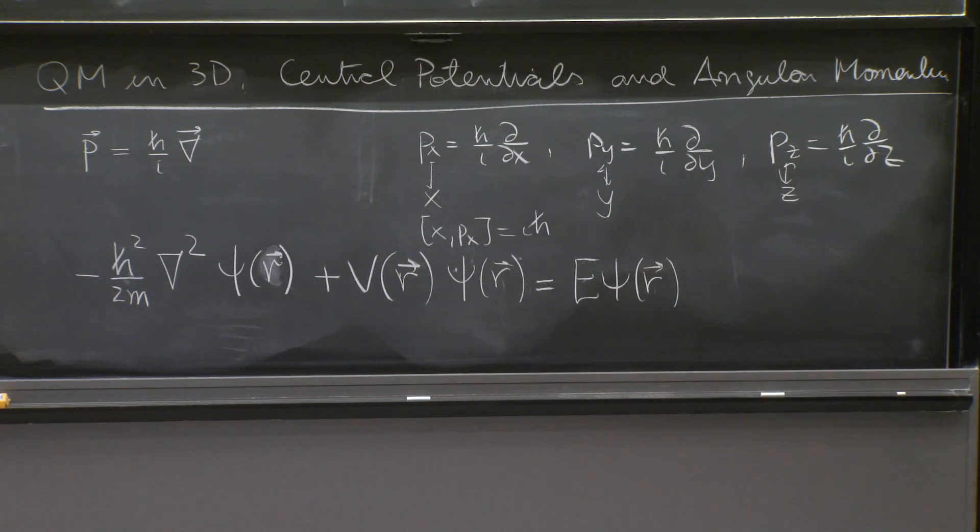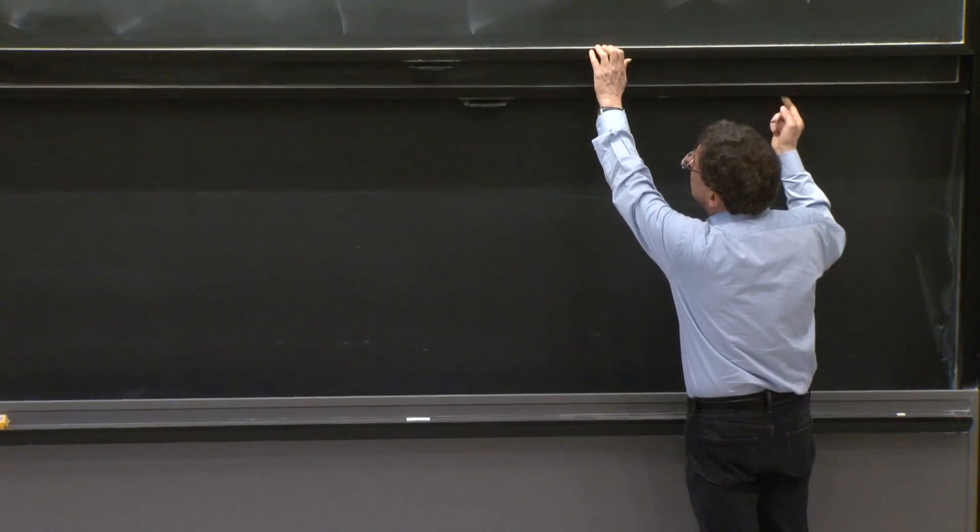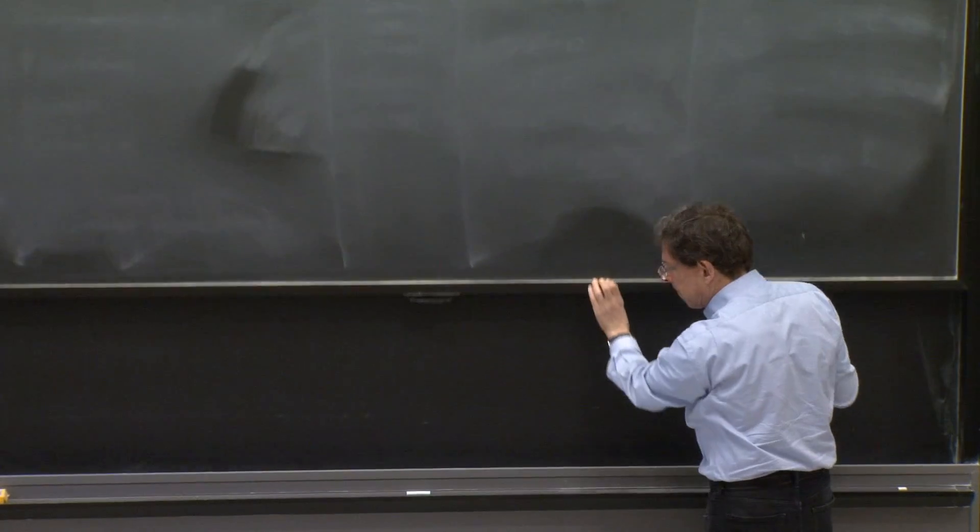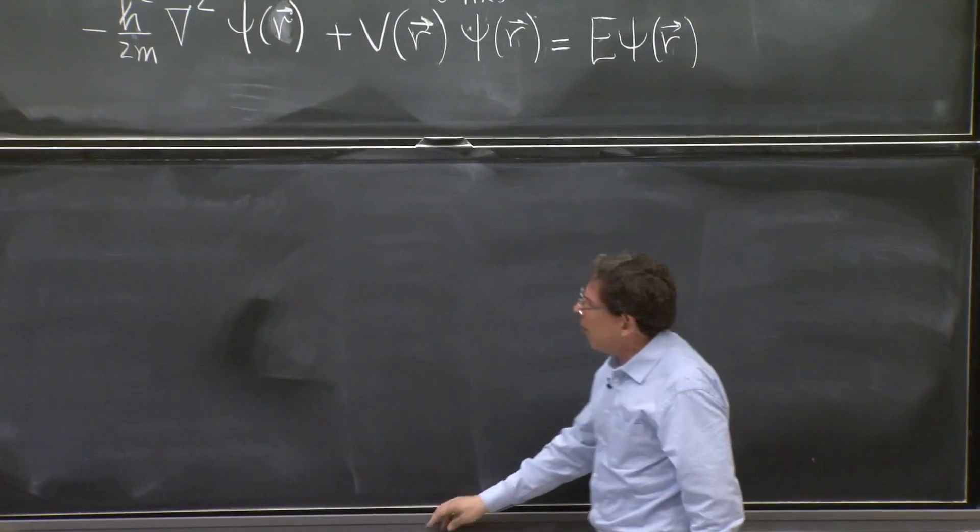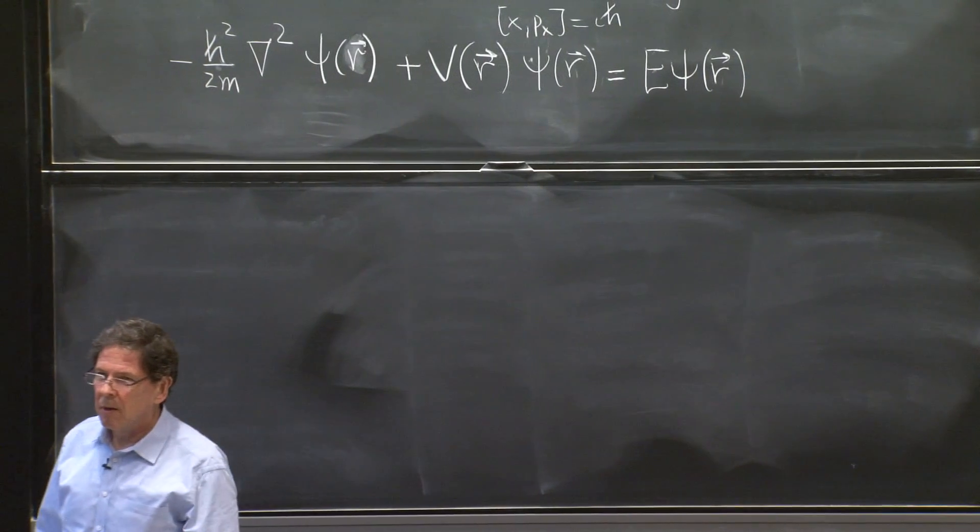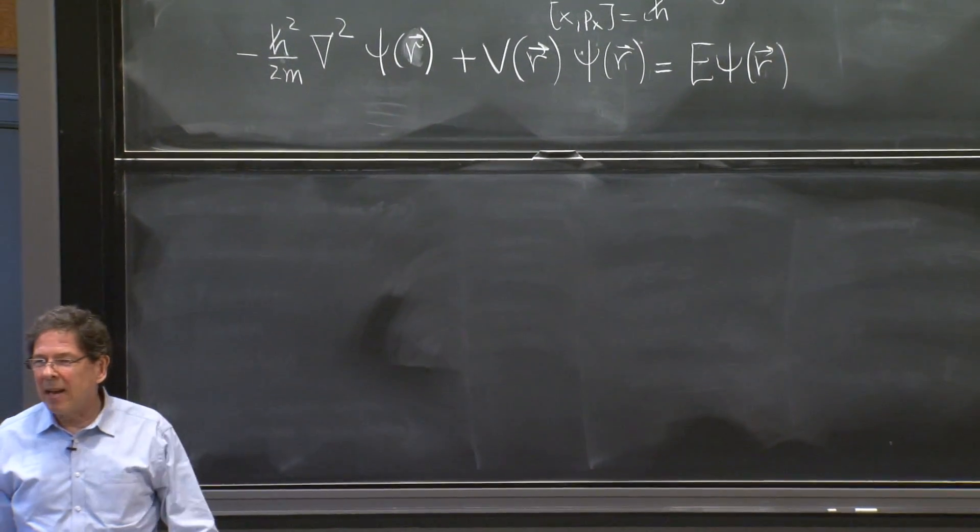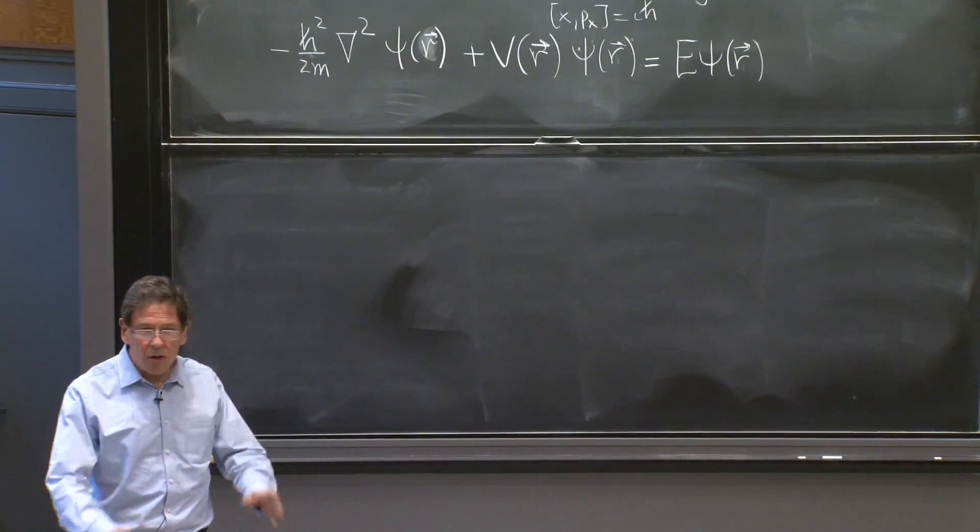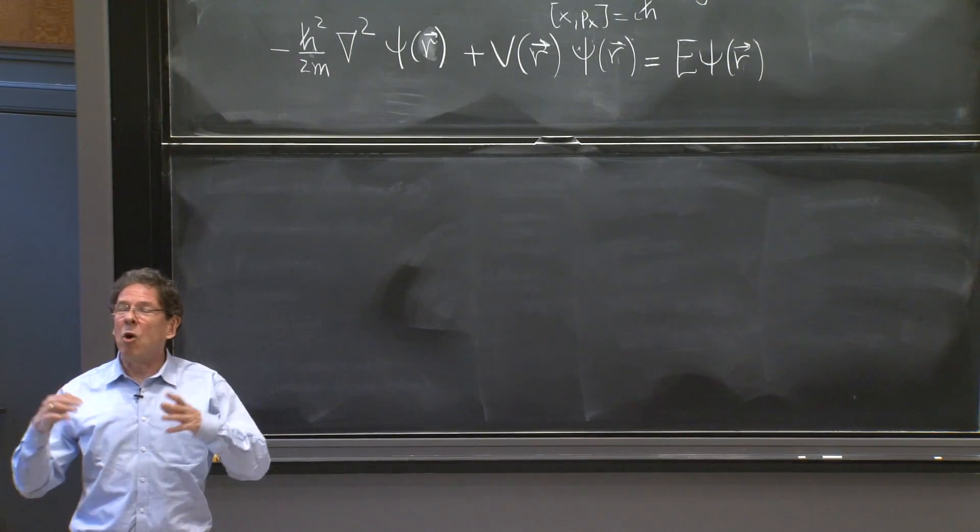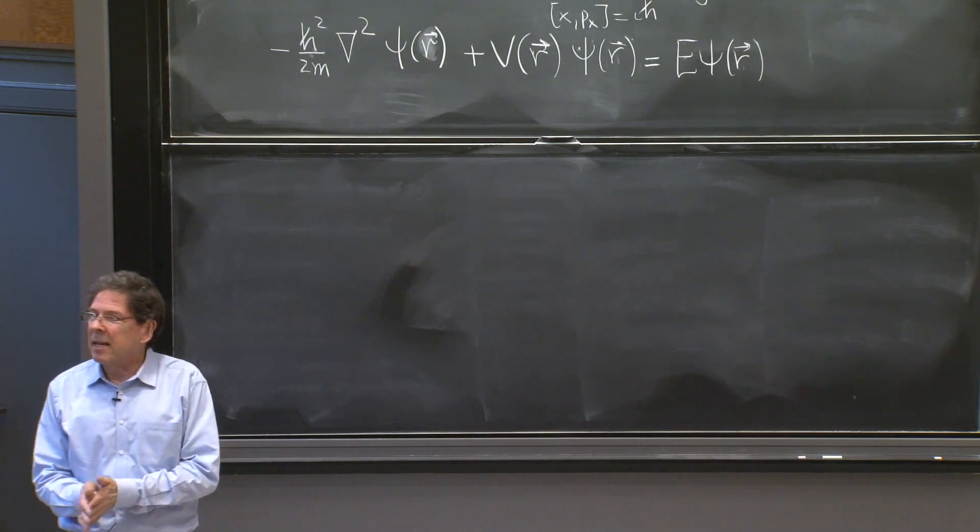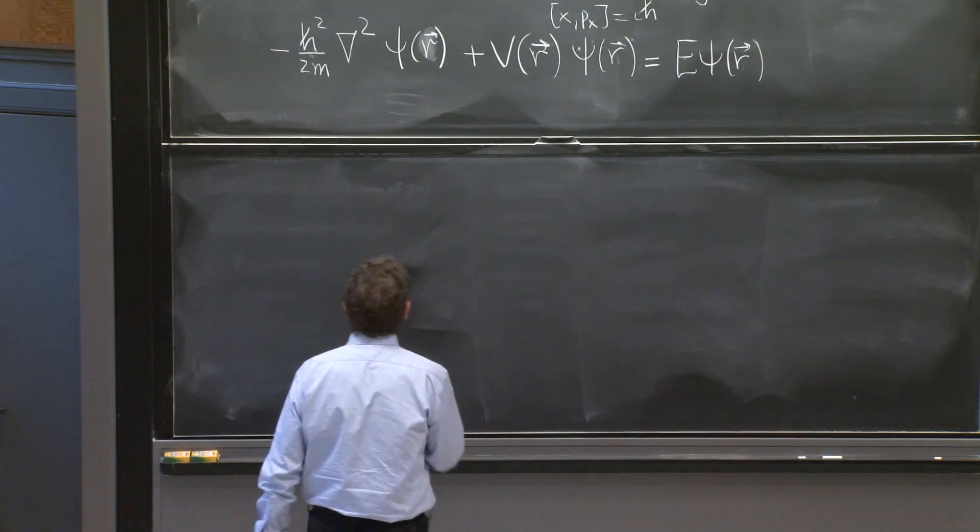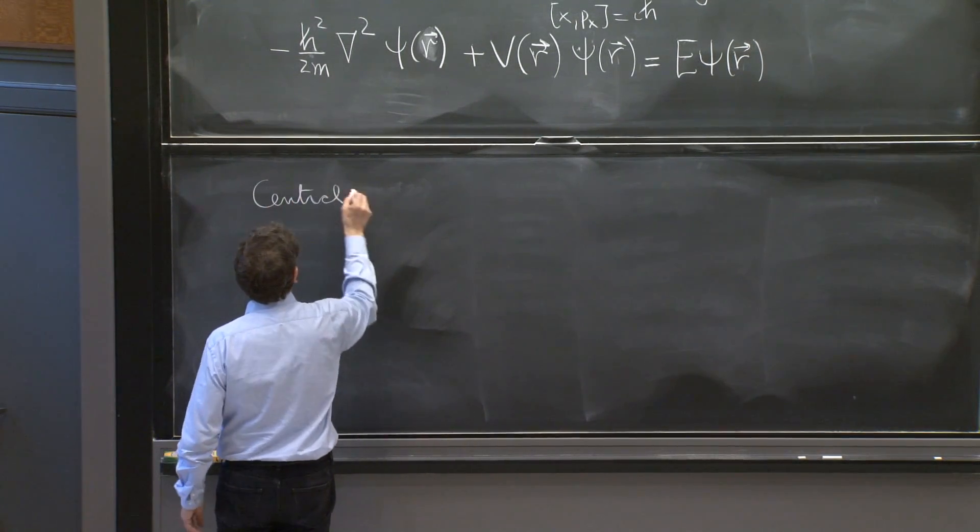This is our time-independent Schrodinger equation. This corresponds to the energy eigenstate, but in three dimensions. So this is the equation we wish to understand. And our ability to understand that equation in a simple and nice way rests on a simplification. That is not always true, but it's true under so many circumstances that it's worth studying by itself.